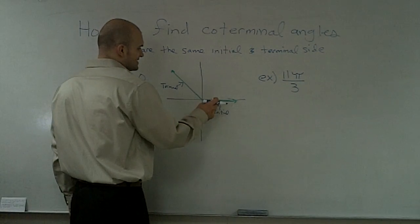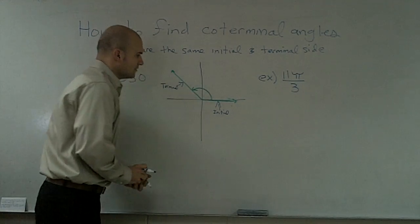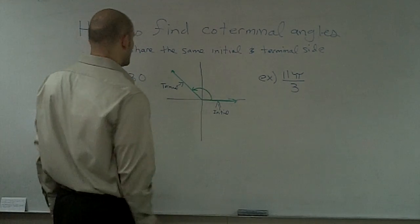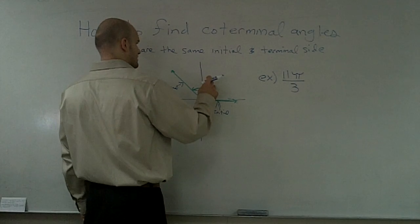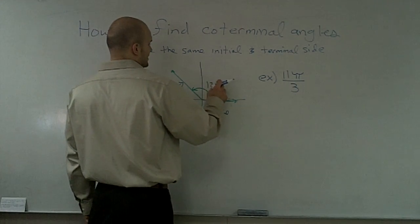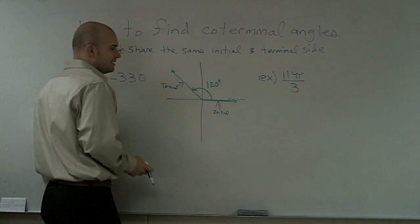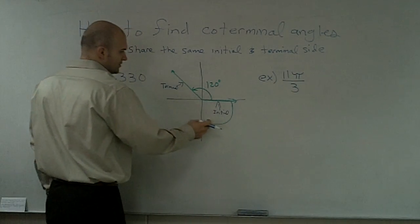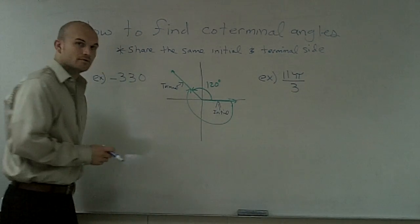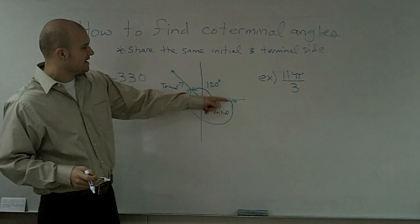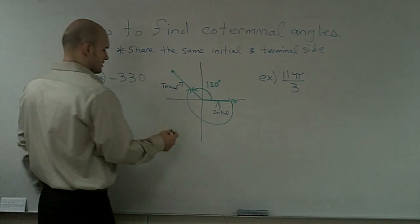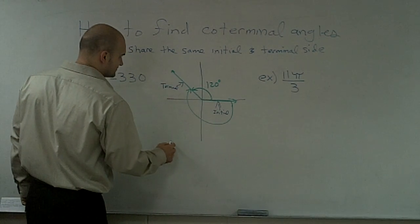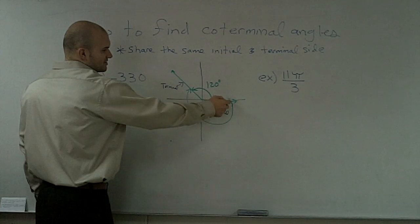Therefore, if I said this angle was, I don't know, let's just call it 120 degrees, then the coterminal angle would be this big angle right here. So therefore, if you say 360, or if you did, or this.